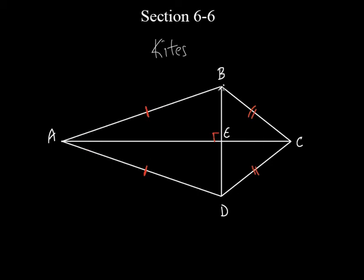So angles A and C are not equal to each other. But look at the big angle B up here and the big angle D down here — they do look equal, and they are equal to each other. The angle between the two unequal sides is equal to the angle between the other two unequal sides. So a kite has exactly one pair of opposite congruent angles. The other pair — A and C — are definitely not equal to each other.